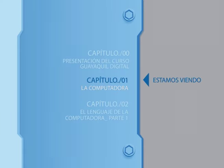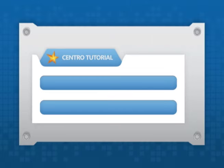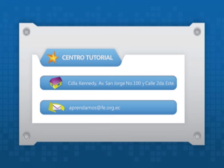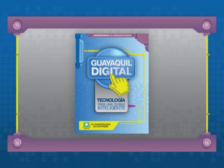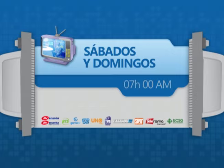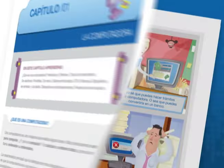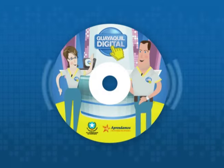Estamos viendo el capítulo 1, la computadora. En la próxima clase veremos el capítulo 2, el lenguaje de la computadora, parte 1. Si quieres ser alumno de Guayaquil Digital, inscríbete gratuitamente en el Centro Tutorial de Aprendamos o en el CAMI más cercano a tu hogar. Solo necesitas la copia de tu cédula. Con tu inscripción recibirás el libro de texto y el CD multimedia. Mira las clases por televisión los sábados y domingos a las 7 de la mañana.